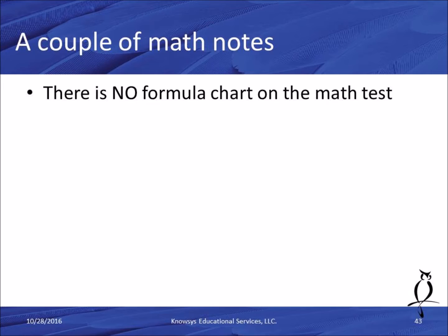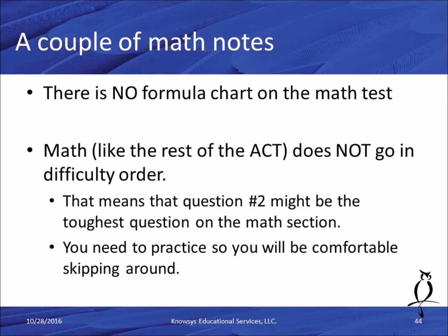A couple of math notes. First, there is absolutely no formula chart on the ACT math test — everything you need to know you have to bring in your head, ready to use. Second, math does not go in order of difficulty, so question number two might be the toughest question in the math section. You need to practice being comfortable skipping around — look at a tough question, mark an answer, circle it, and move on. Number three is probably going to be a lot easier. This is psychologically something you need to practice, because that's not how most math tests in school are structured.